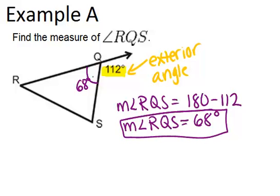That's an important thing to realize: interior angles and their corresponding exterior angles will always be a linear pair and add up to 180 degrees.